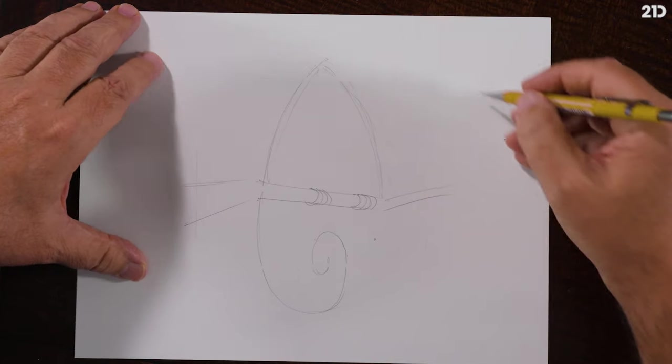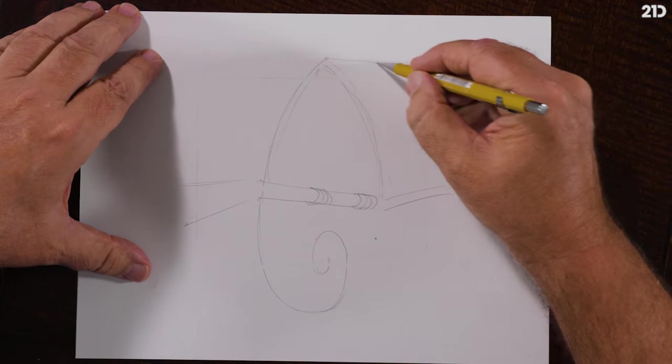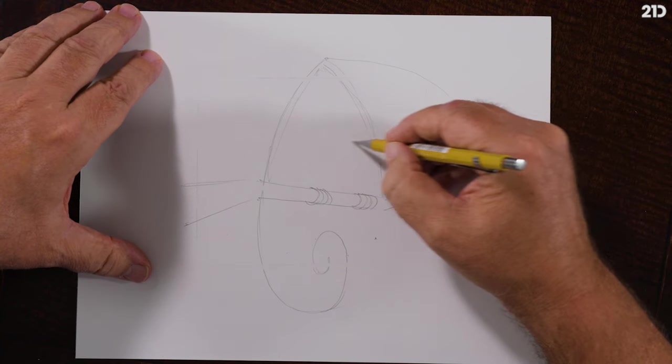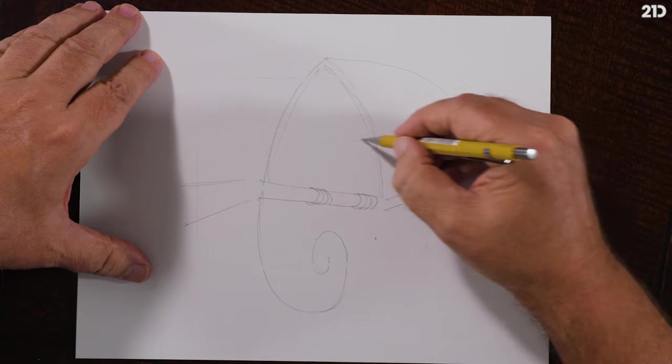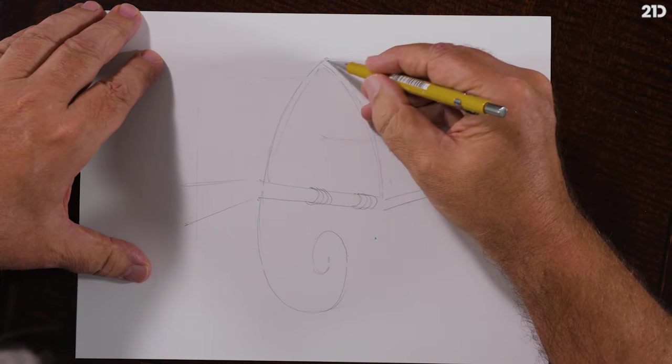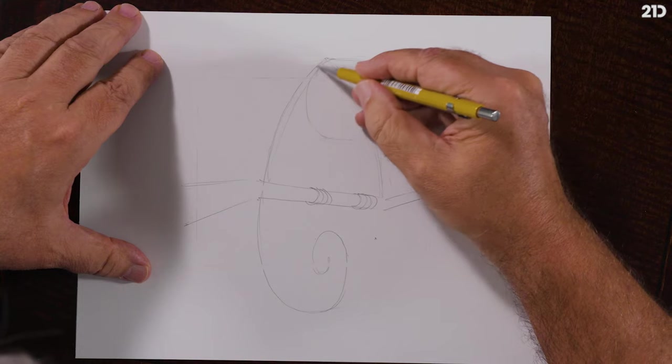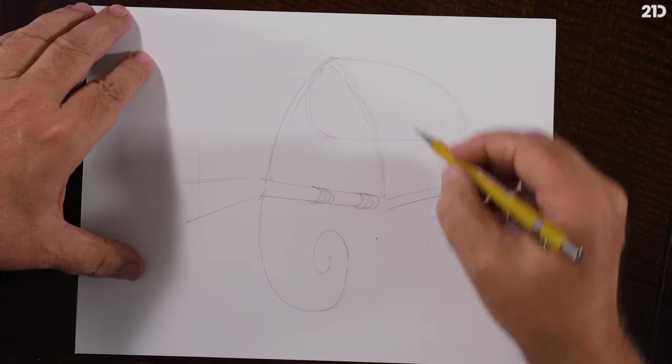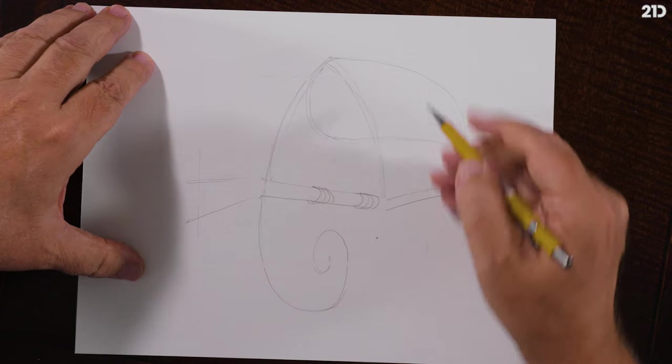Now comes the big toucan nose. Isn't this fun? Look how big this is - exaggerated, right? The exaggeration is the fun part. So I'll draw that toucan beak. This is curved, remember? This is like that Fruit Loops character. Curve that around there and coming across.